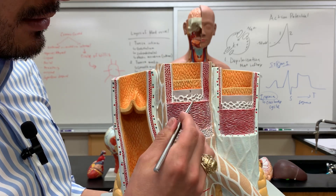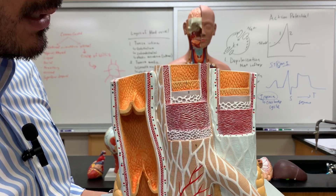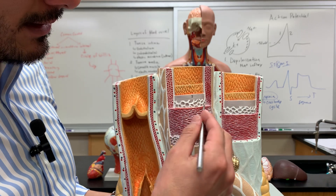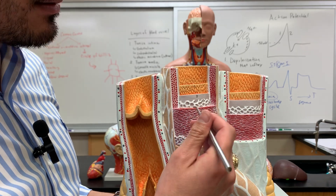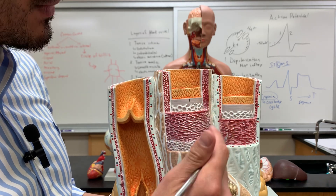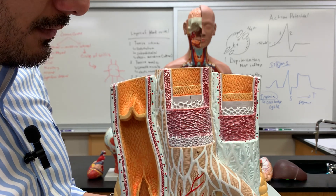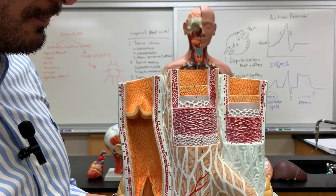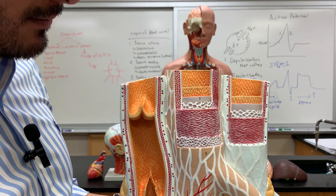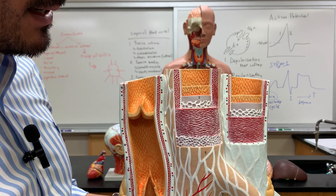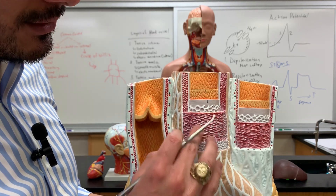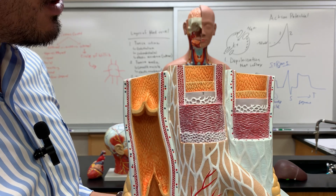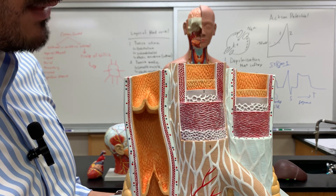One thing to note about the tunica media is that it has a large effect in controlling the diameter of the blood vessel. In the contracted state, this will result in vasoconstriction of the blood vessel.